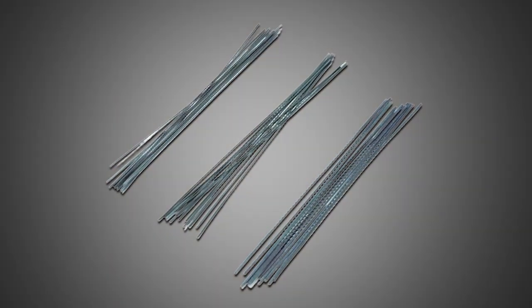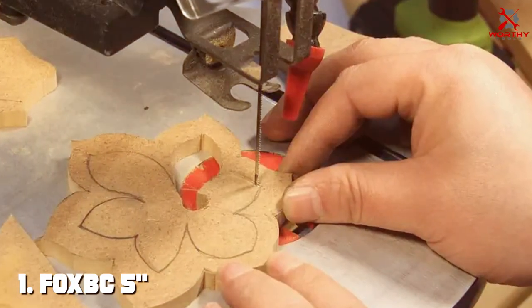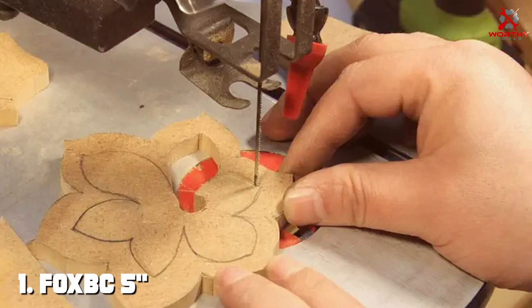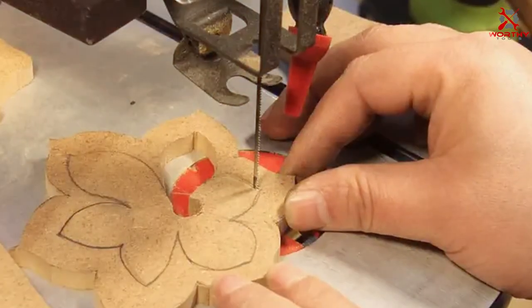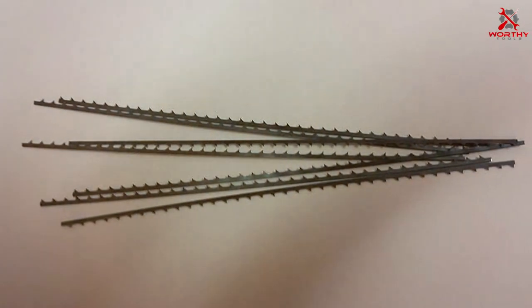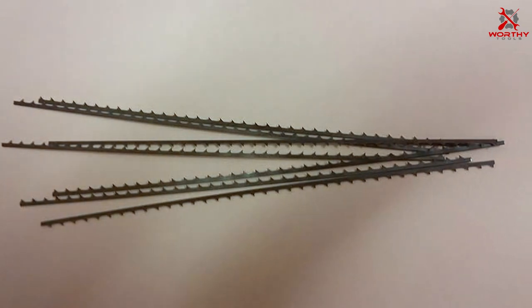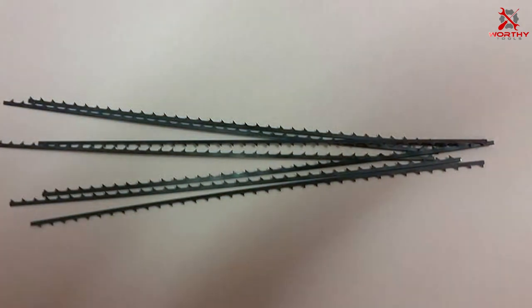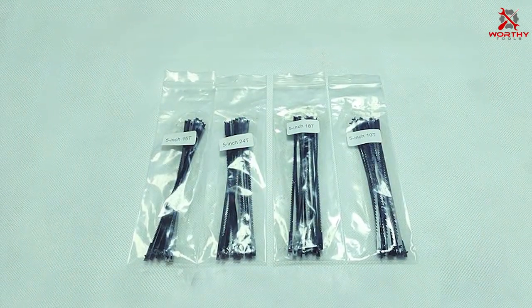Number one: EVO XPC5 Scroll Saw Blade Pin End Replacement WEN 3921 48-Pack. For those immersed in the world of woodworking, the EVO XPC5 scroll saw blade pin end replacement pack for WEN 3921 is a cornerstone of versatility and reliability. This 48-pack collection offers an expansive array of pin end blades meticulously engineered to cater to a broad spectrum of cutting needs.